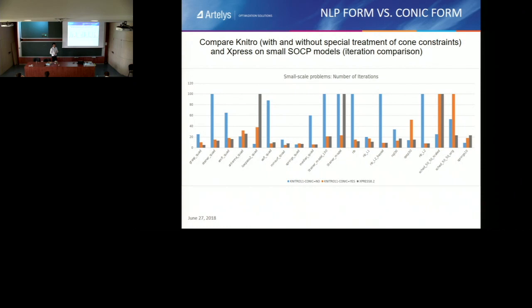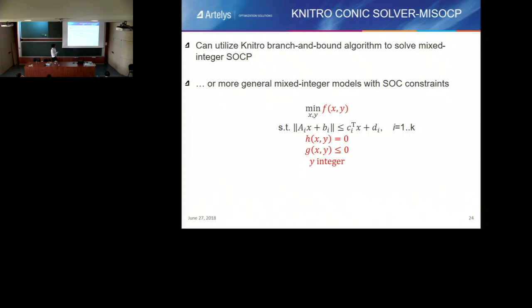These are pure conic problems — not nonlinear SOCPs. The reason that Nitro 11 differs from Express is something fundamentally different, because we don't use the same barrier algorithm as Express. From the internal architecture of Nitro, we are able to use this algorithm inside our branch-and-bound routine, so you can apply it when you want to solve mixed-integer SOCPs — for instance, SOCP constraints on the continuous variables but integer variables in the other part of the constraints. That's it for the SOCP algorithm; there are still some developments going on and we expect improvements in terms of CPU time.